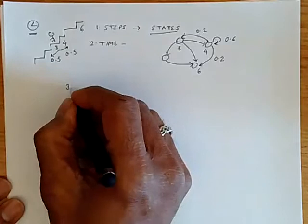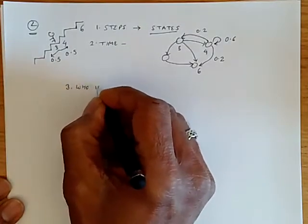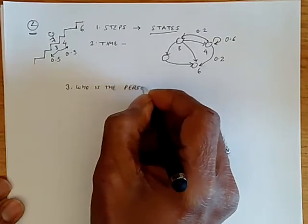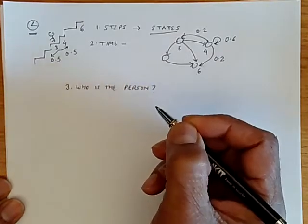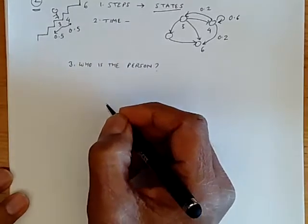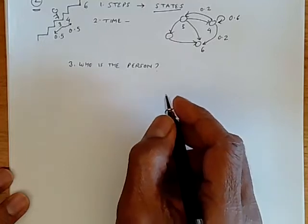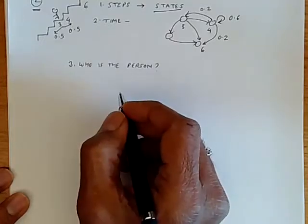And the third thing is, who is the person? Who is the person? Or what is the person considered? And there is no actual person, of course, but what we really have is a sequence of states being assumed by the stochastic process over time.